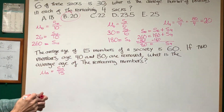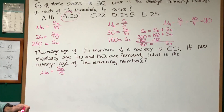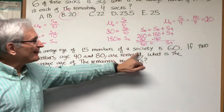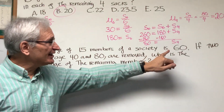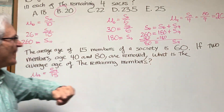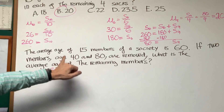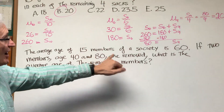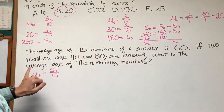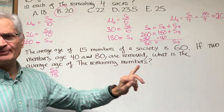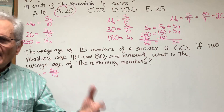Let's go to the next problem. If the average age of 15 members of a society is 60, and two of the members, age 40 and 80, are removed, what is the average age of the remaining members? Same approach.